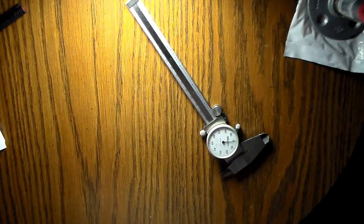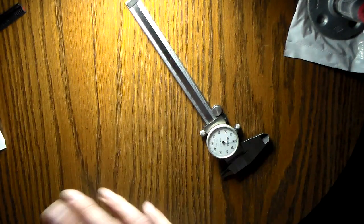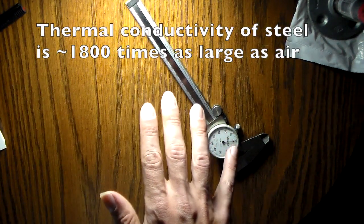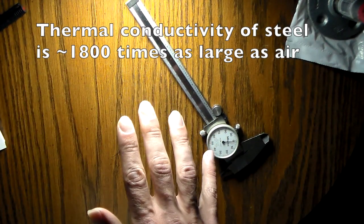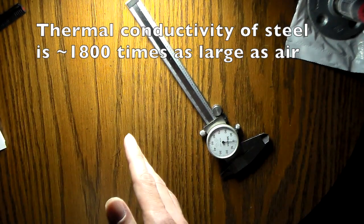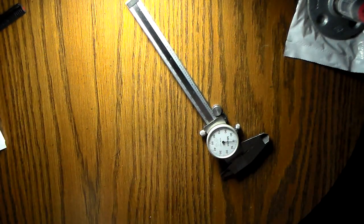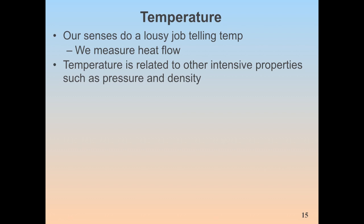This is also why sticking your arm in an oven is fine, but touching any metal inside gets you seriously burned: air is fairly good at insulating, but metal is very good at conducting heat. Temperature is related to intensive properties — properties independent of how large the system is, such as pressure and density.